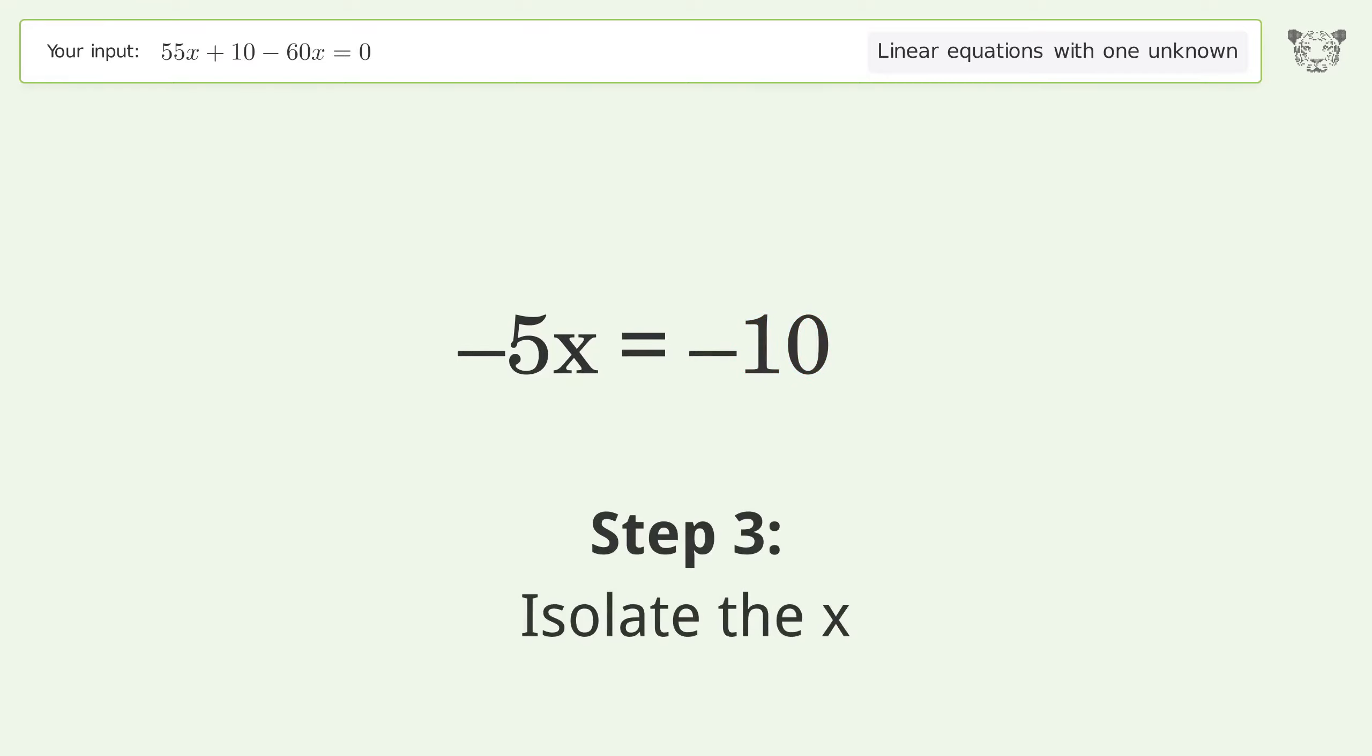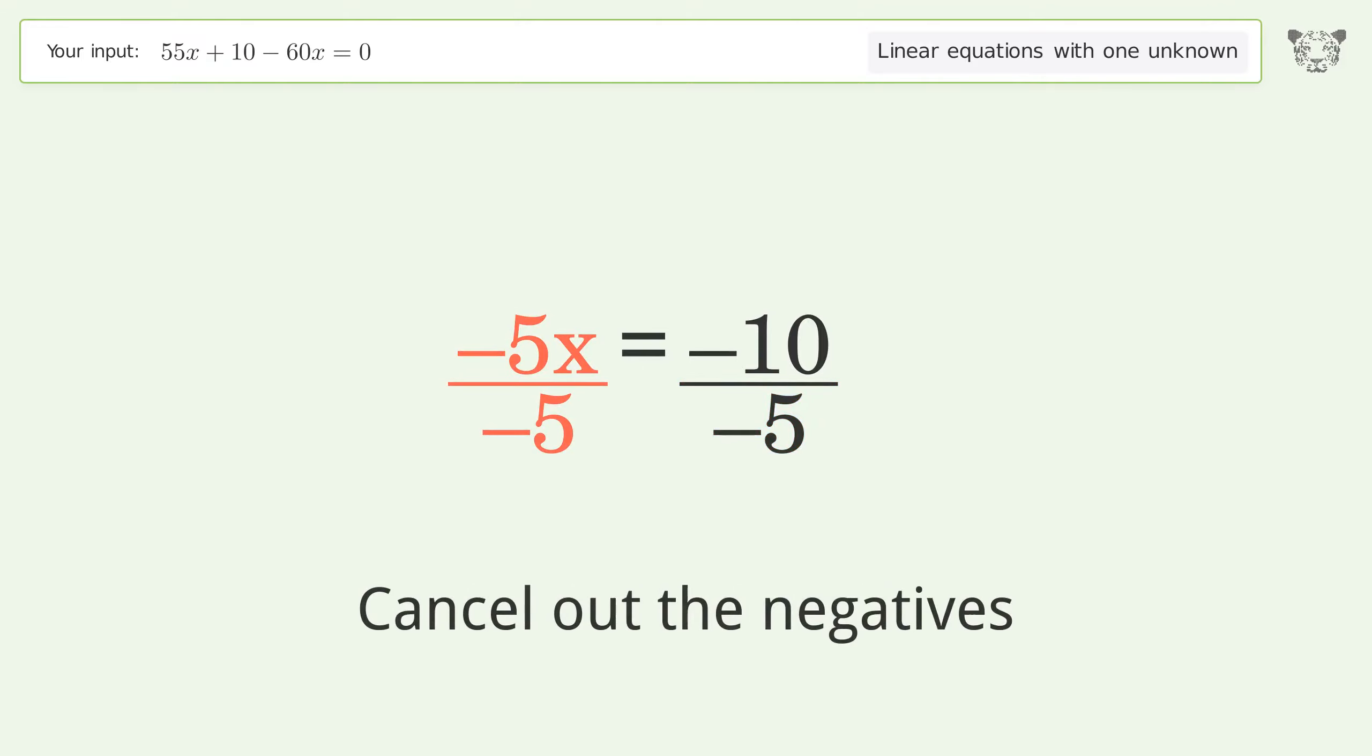Isolate the x. Divide both sides by negative 5. Cancel out the negatives. Simplify the fraction.